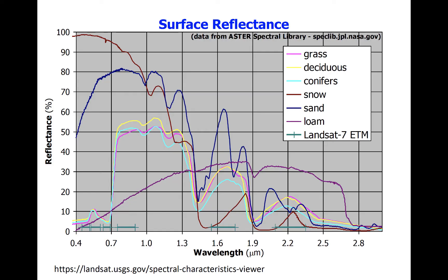Previously, we considered that different types of surfaces have different emissivity coefficients. Likewise, the reflectance of the surface varies based on the composition of the surface. This plot depicts reflectance as a function of shortwave wavelength for a variety of different surfaces.